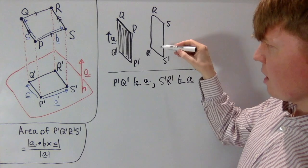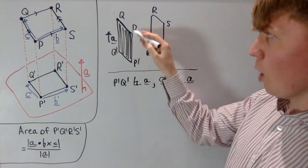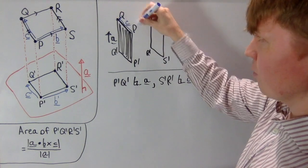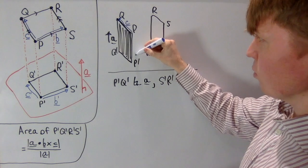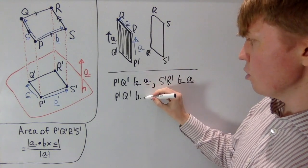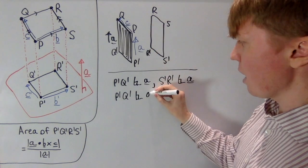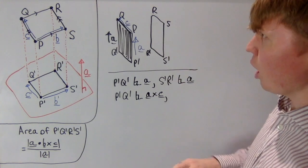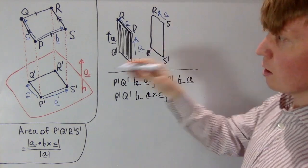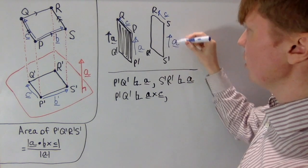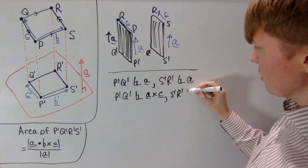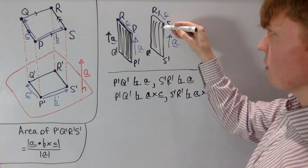These two vectors lie in different planes, but we can say that p prime q prime is also going to be orthogonal to the normal of the second plane. The second plane contains the line segment from p to q, which goes in the direction of c, and also contains lines going in the direction of a — so a normal to this plane is a cross c. Because s prime r prime also lies in this second plane, it is also orthogonal to a cross c.